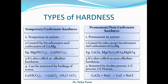Temporary hardness is also known as alkaline hardness or carbonate hardness, because bicarbonates, carbonates, and hydroxides are alkaline in nature. Permanent hardness is also known as non-alkaline hardness or non-carbonate hardness, because the ions responsible — sulfates, chlorides, nitrates — are acidic in nature. So the alternative names reflect the chemical character of the ions causing the hardness.